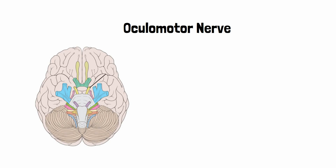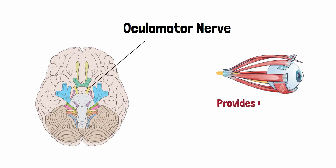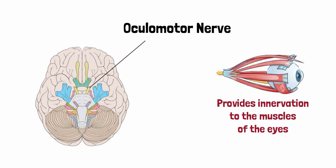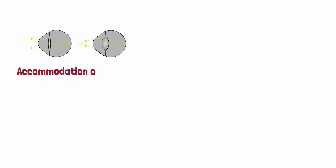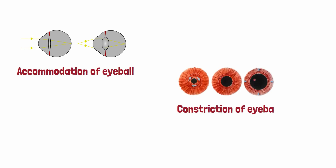Hello and welcome back everyone. The oculomotor nerve is a paired motor nerve which provides innervation to the muscles of the eyes along with the 4th and 6th cranial nerves. The primary target of the oculomotor nerve are the external eye muscles which control the external movements of the eyes, such as looking up and down. However, some of its fibers also pass onto the internal eye muscles which are involved in accommodation and constriction of the eyeball.